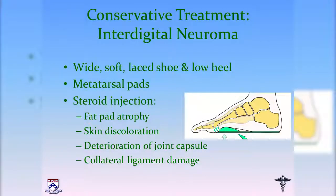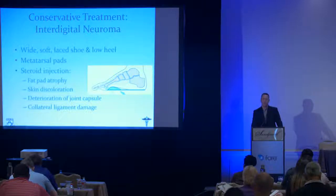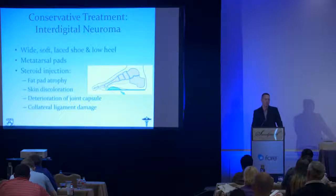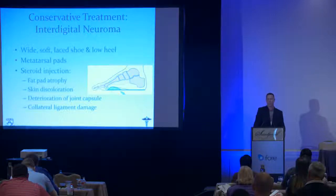Non-surgical treatments for neuromas include a wider, soft, low-heeled shoe to avoid loading the forefoot. Metatarsal pads — placed inside the shoe, not on the foot — help offload the nerve. Steroid injections are used selectively; I'll do one injection and reassess. Side effects include fat atrophy, skin discoloration, and joint capsule and collateral ligament degeneration that can result in instability.